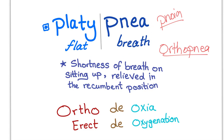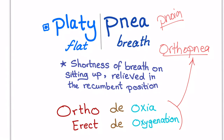Platypnea is associated with orthodeoxia. Ortho means erect, and d-oxia means no oxygenation. So when I am erect, there is no oxygenation. Do not confuse orthodeoxia with orthopnea.